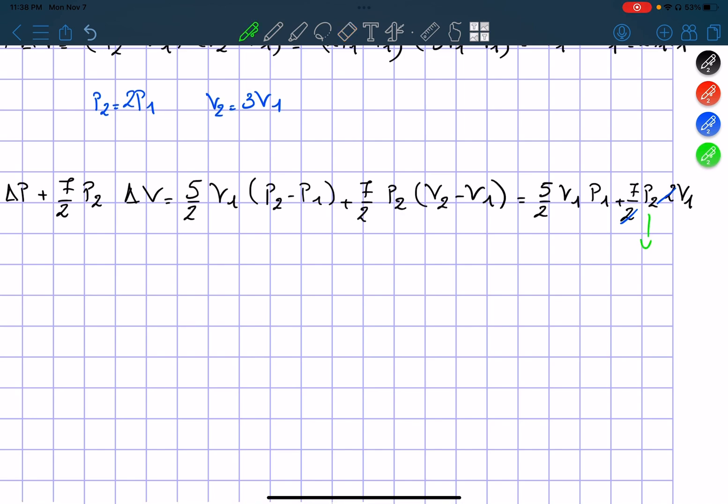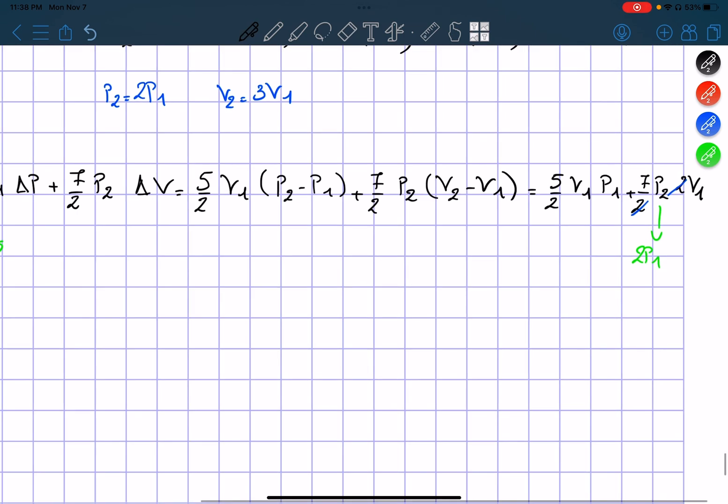Here is P2 which we know is equal to 2P1. So now we can rewrite it as 5 over 2 V1 P1 plus 14 P1 V1. We can take V1 and P1 and then say 5 over 2 plus 14 which equals 33 over 2 V1 P1.